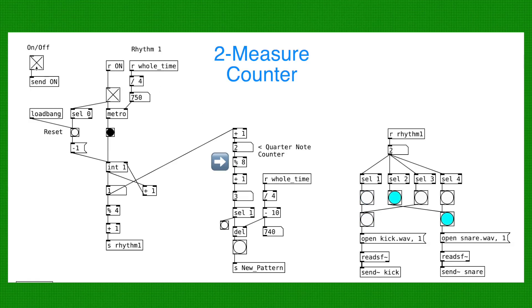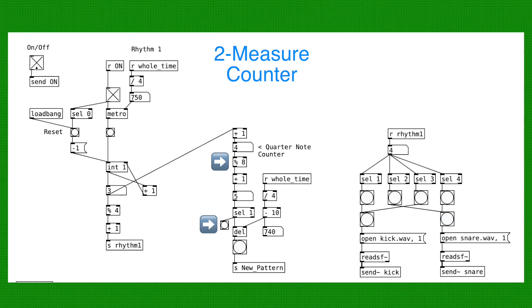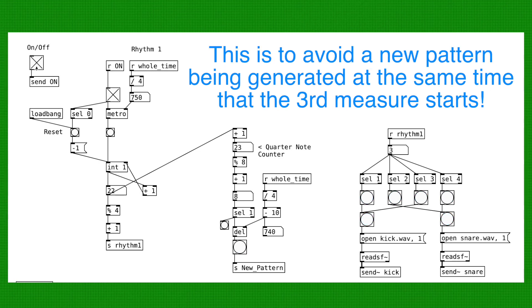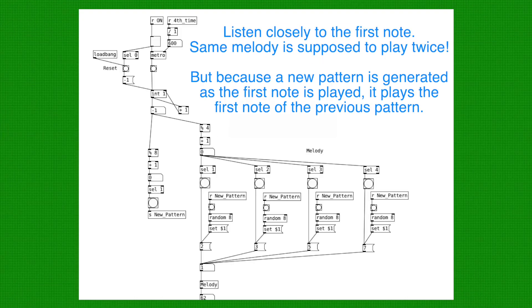So after the quarter note is played 8 times, a bang is outputted. And that bang message is delayed by almost a quarter note. So the delay time is the length of a quarter note, but shorter by 10 milliseconds. Therefore, a new pattern is generated right before the start of the third measure. This is to avoid an issue where the first note of the previous pattern will play at the same time as a new pattern is generated. I'll put a diagram or an example right here to hopefully explain this better.